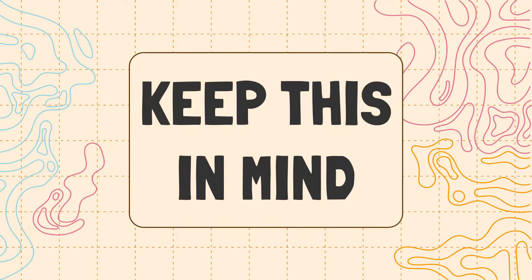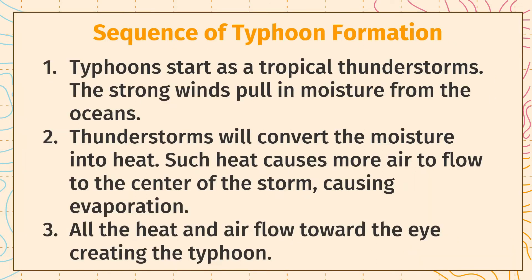Keep this in mind. Here is the sequence of typhoon formation. First, typhoons start as tropical thunderstorms — strong winds pull in moisture from the oceans. Second, thunderstorms convert the moisture into heat; such heat causes more air to flow to the center of the storm, causing evaporation. And lastly, all the heat and air flow toward the eye, creating the typhoon.